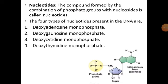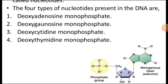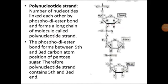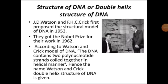A nucleotide is the compound formed by the combination of a phosphate group with a nucleoside. There are four types of nucleotides present in DNA: deoxyadenosine monophosphate, deoxyguanosine monophosphate, deoxycytidine monophosphate, and deoxythymidine monophosphate. These nucleotides join together via phosphodiester bonds to form a long chain known as a polynucleotide strand. The phosphodiester bond is found between the 5' carbon and the 3' carbon of the pentose sugar, so the polynucleotide strand contains a 5' end and a 3' end.